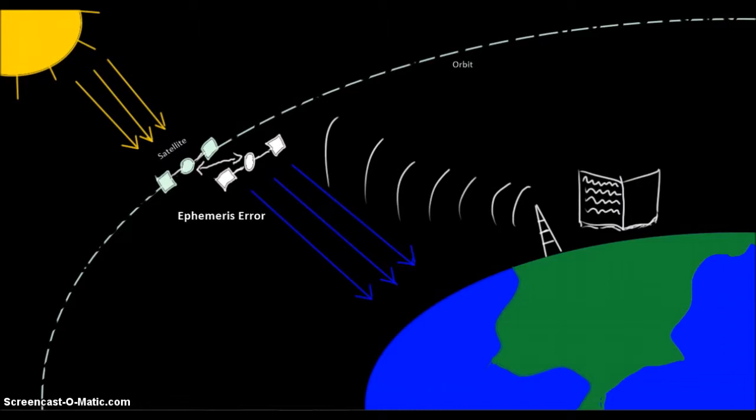This almanac is programmed into each GPS receiver, and it indicates where each satellite is in the sky at any given time. That information is transmitted every 30 seconds, but the almanac itself is only updated every hour or so. Any changes in position that take place over the last hour are unknown to the receiver and results in ephemeris errors.